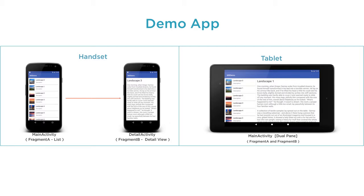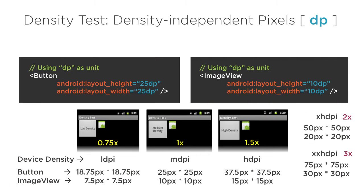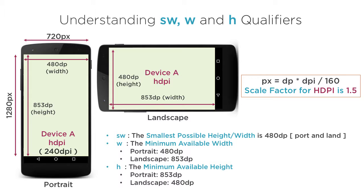The Android devices have a wide range of screen configurations ranging from smartphones to tablets, small screen to large screen, low density screen to extra high density screens, and so on. So practically, it becomes a real challenge for a developer to create layouts in such a way that it will make a user feel as if the application was designed for his own Android device.